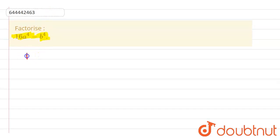So we have 16a^4 - b^4. It means we can write it as (4a²)² minus (b²)².